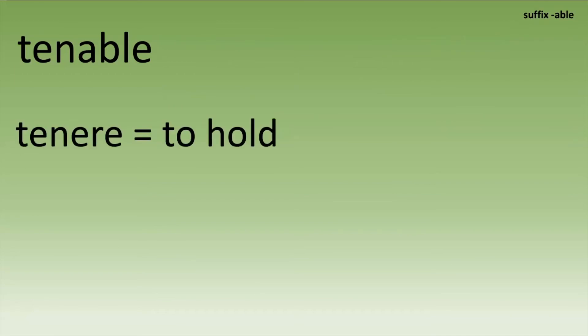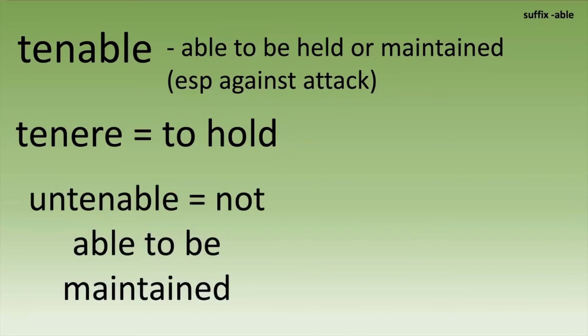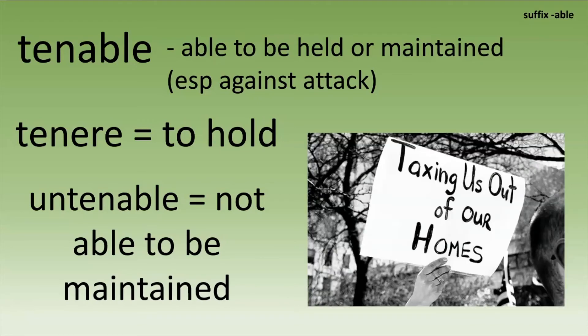'Tenable' — 'tenere' means to hold, as we saw a few slides ago. So tenable is able to be held, able to be maintained. This can be in a very physical sense, like a fortress would be tenable — you can maintain it against an attack. But it can also describe a situation that can or cannot be maintained. You often see this in the negative form 'untenable.' I recently heard this on the news where they were talking about an area where living there was becoming untenable because the taxes were so high.